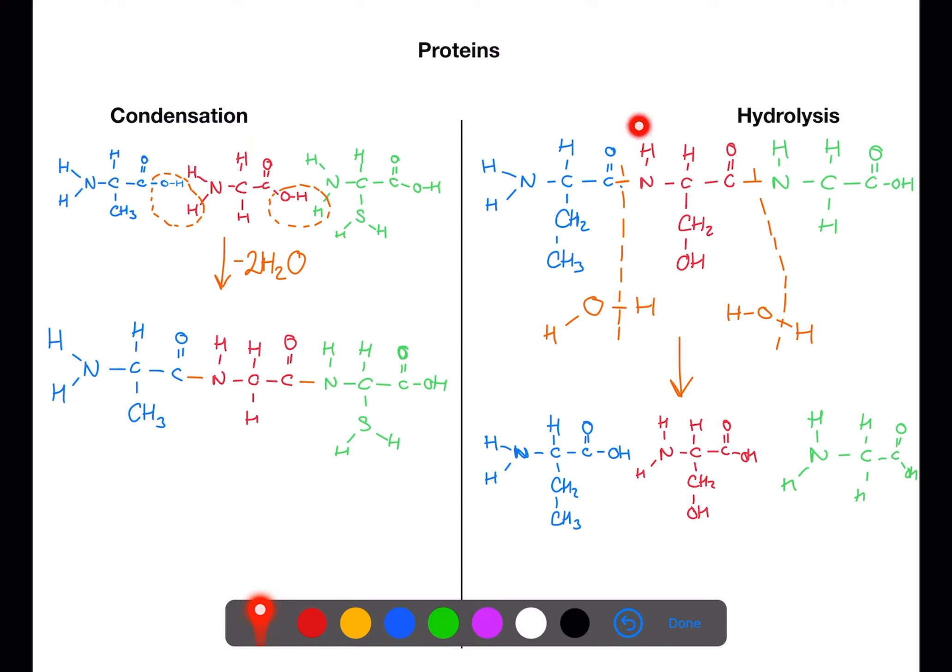When you're looking at hydrolysis, you first need to identify where the amide groups are. You need to cut between the C double bond O and the NH. You then need to look at water and you cut that into OH and H. You then join these parts back on to make the original amino acids with their carboxyl and amino group.